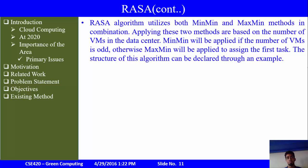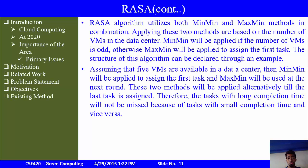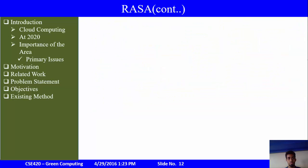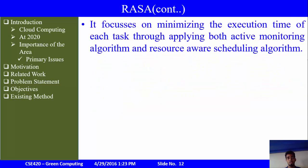RASA uses the basic min-min and max-min algorithms as a combination. Applying these two methods is based on the number of virtual machines in the data center — min-min is applied if the number of VMs is odd, otherwise max-min is followed. Assuming five virtual machines in a data center, min-min is applied first, then max-min, alternating until the last task is assigned. This ensures tasks with long completion time are not missed because of tasks with short completion time. This algorithm minimizes execution time by applying both active monitoring and resource-aware scheduling.